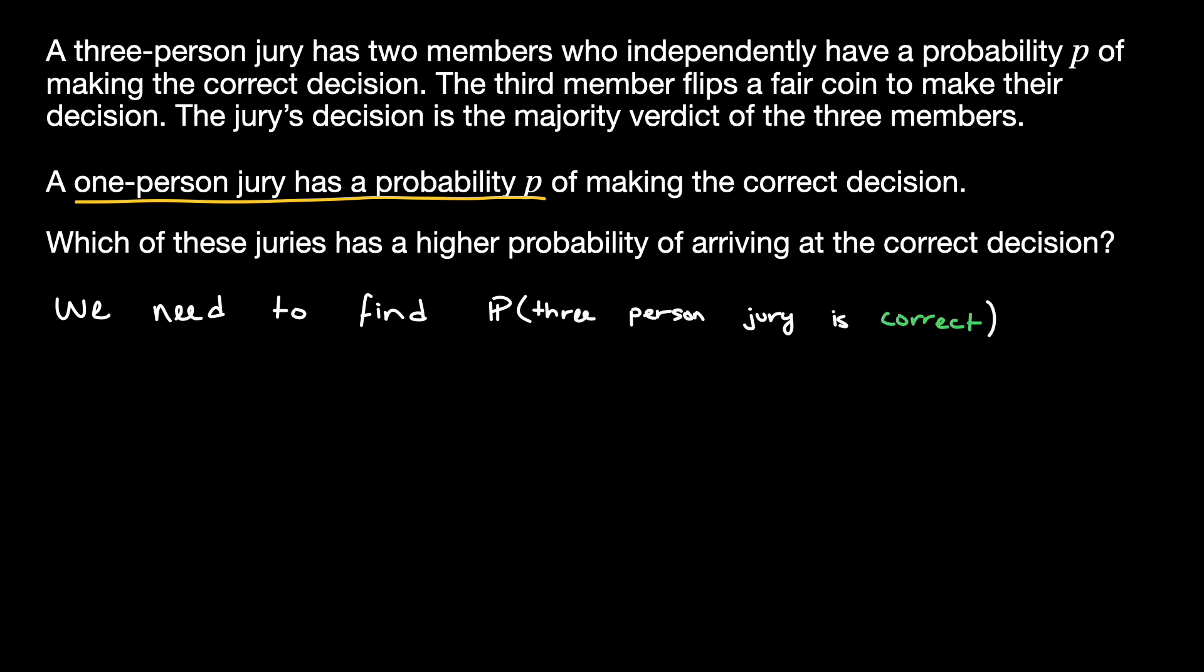Let's work this out by breaking it into two possibilities. Our first possibility is that both of the logical jurors who do not make their decision via a coin flip are correct. In this case, it does not matter what the third member who flips a coin decides. The probability that both the logical jurors are correct is simply P times P, because we can assume that both of these members are making their decision independently as it is given in the question. Thus, this probability is P squared.